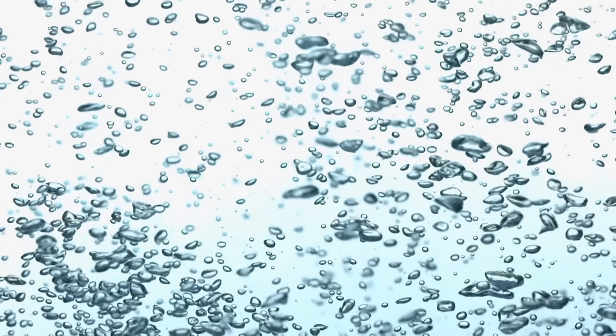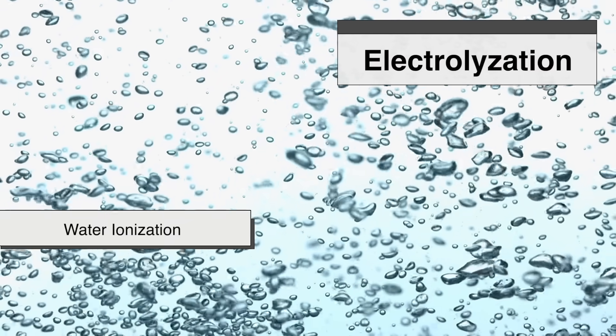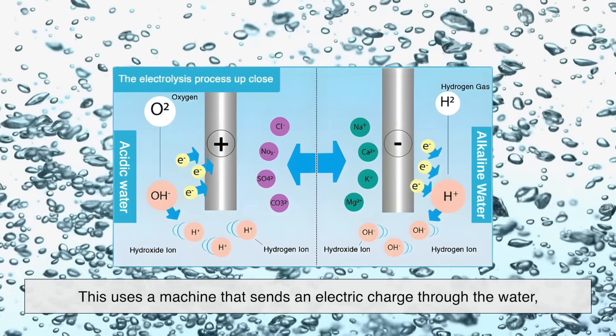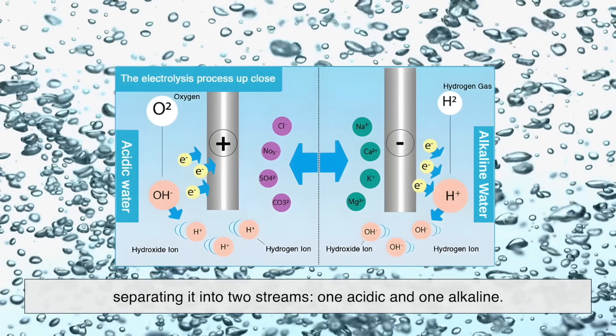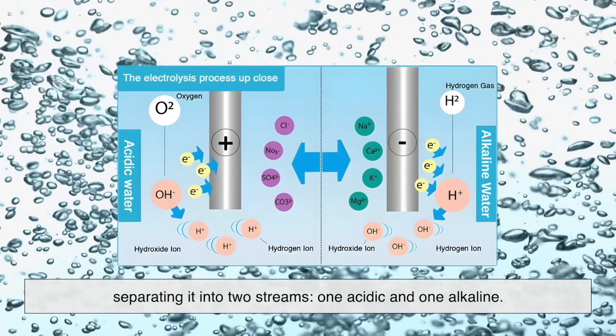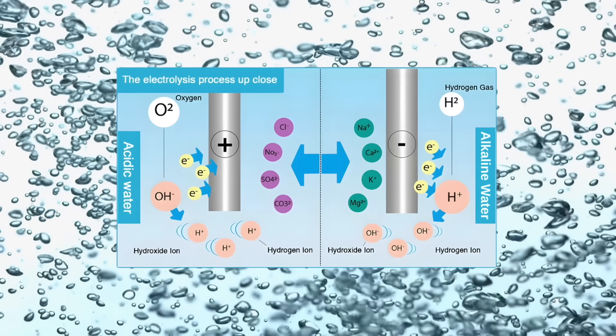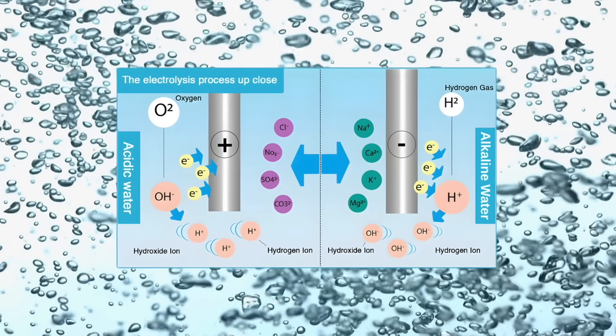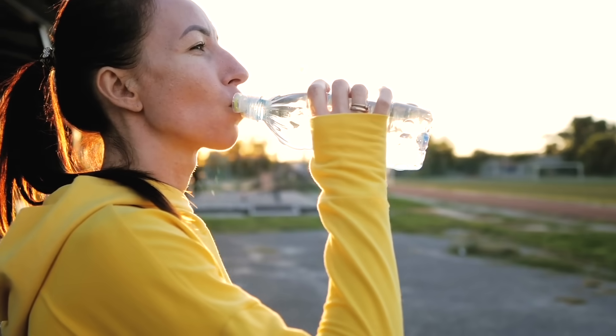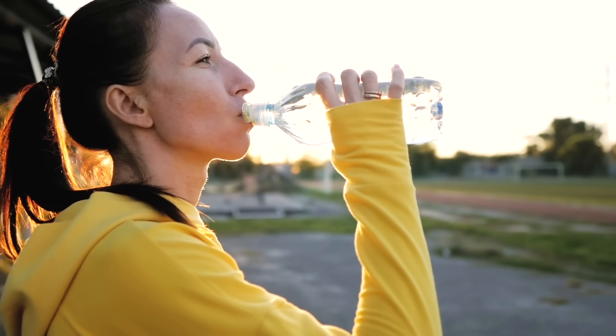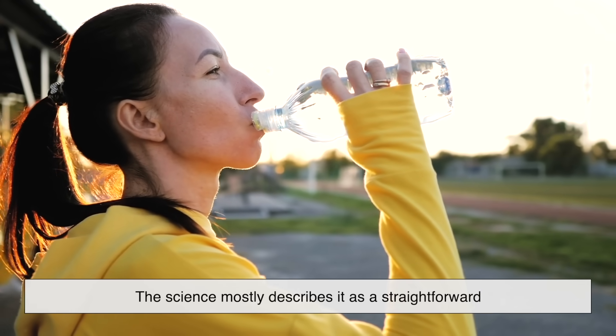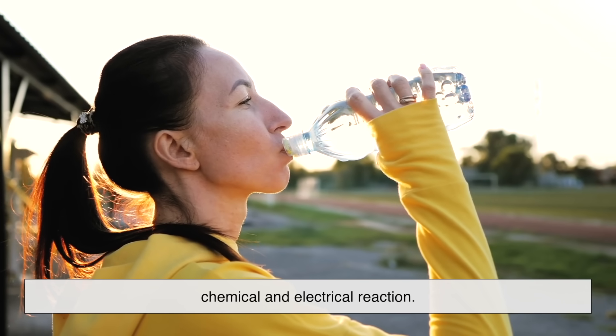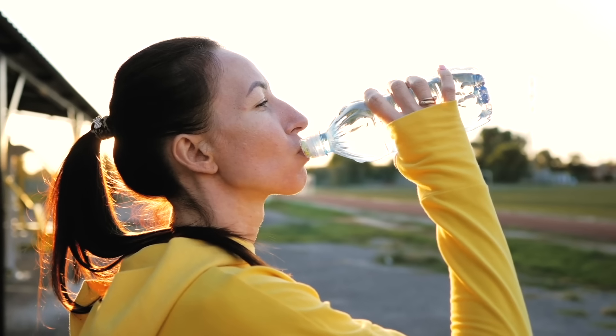The second method is called electrolytization, or water ionization. This uses a machine that sends an electric charge through the water, separating it into two streams, one acidic and one alkaline. The alkaline stream is what ends up in those bottles you see in the store. While some brands insist this process energizes the water, the science mostly describes it as a straightforward chemical and electrical reaction, not an enchanted transformation.